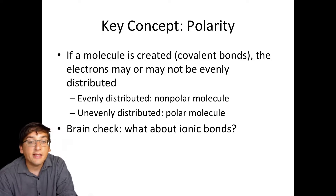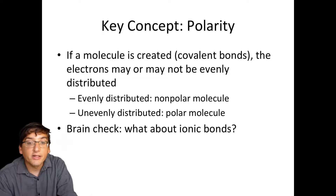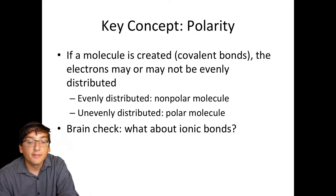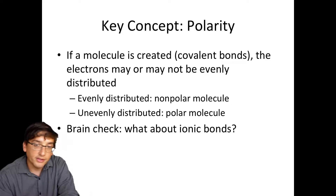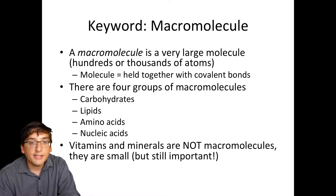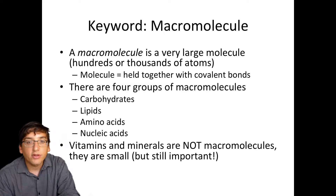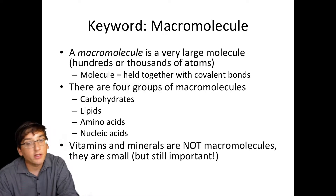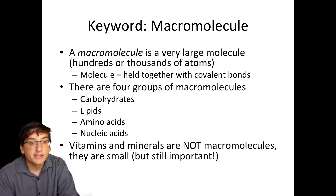Ionic bonds could be thought of as very, very polar — a positive ion and a negative ion making very strong positive and negative ends, even more polar than a polar molecule. Macromolecules are all made with covalent bonds — some polar and some non-polar. There are no ionic macromolecules because ionic compounds don't make molecules; they make crystals like salts.